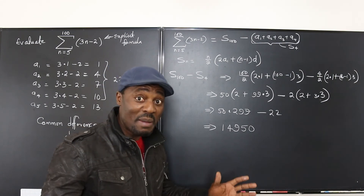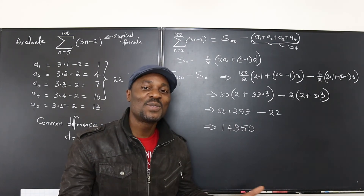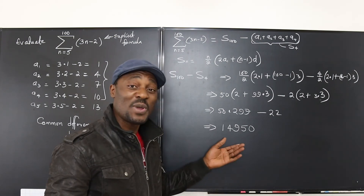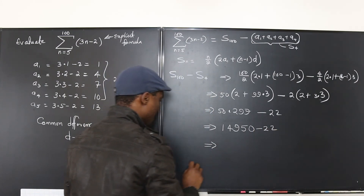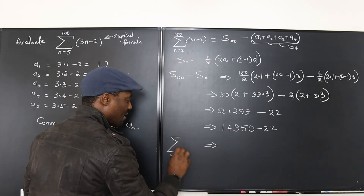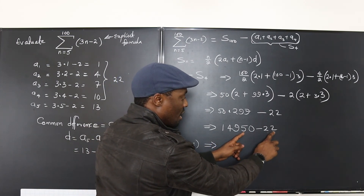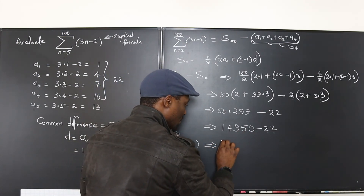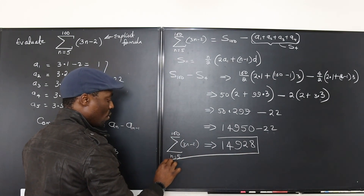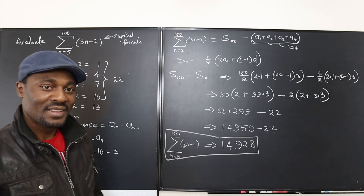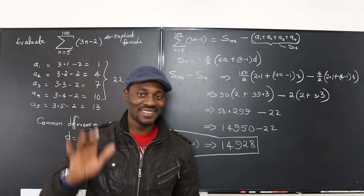So the sum from n equals 5 to 100 of 3n − 2 is 14,928. I'll see you in the next video. Until then, don't stop learning, because those who stop learning have stopped living — tell them I said so. Bye bye!